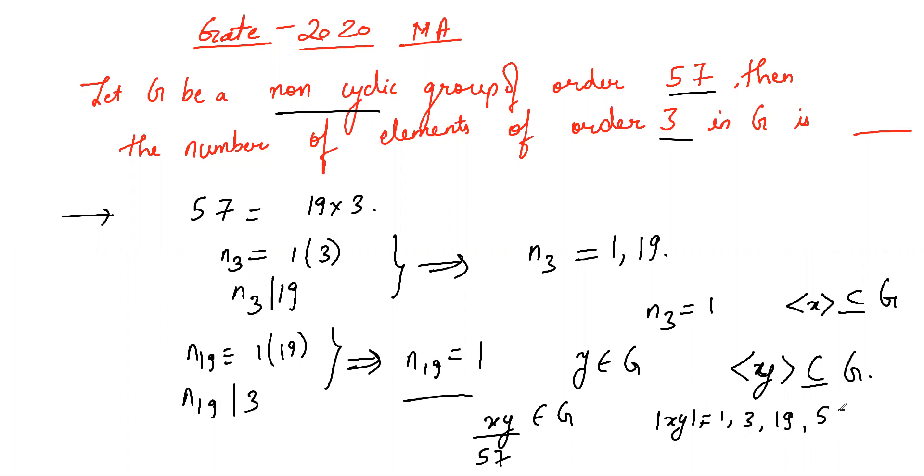It cannot be 1 because that would imply x and y are inverses of each other, which is not the case because x has order 3 and y has order 19.